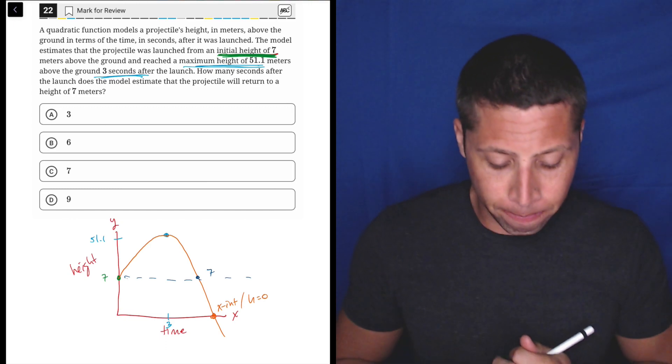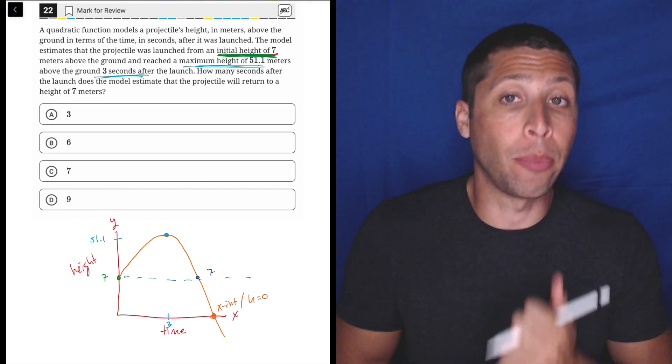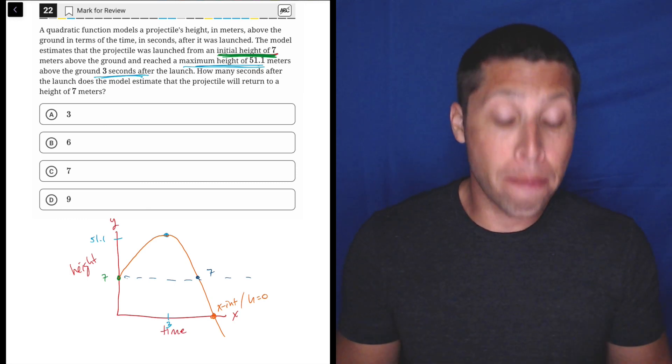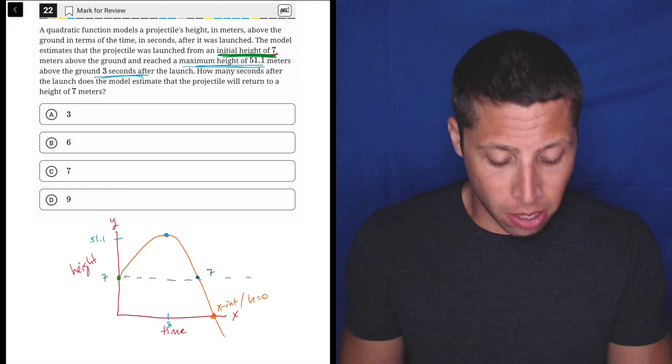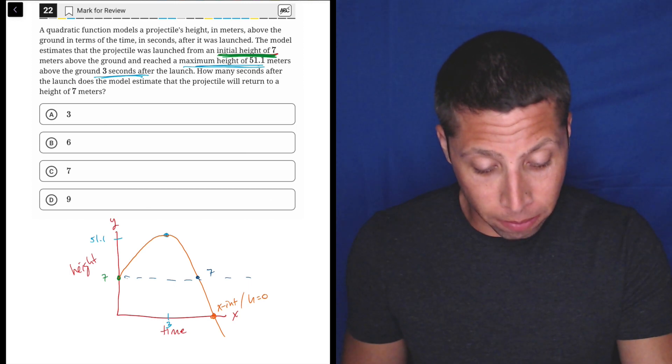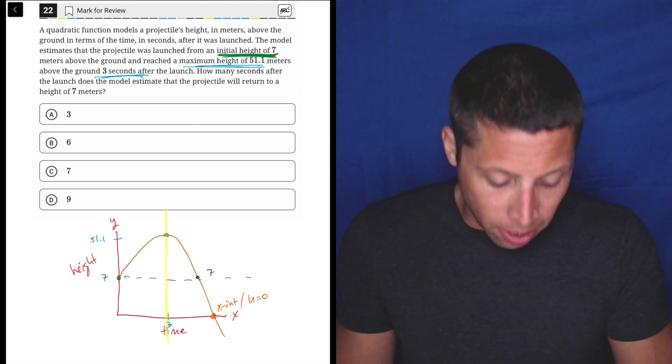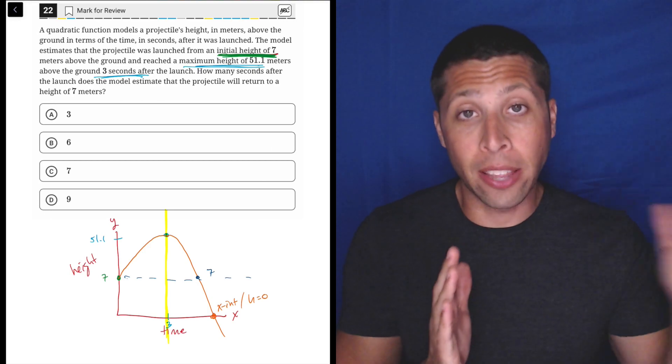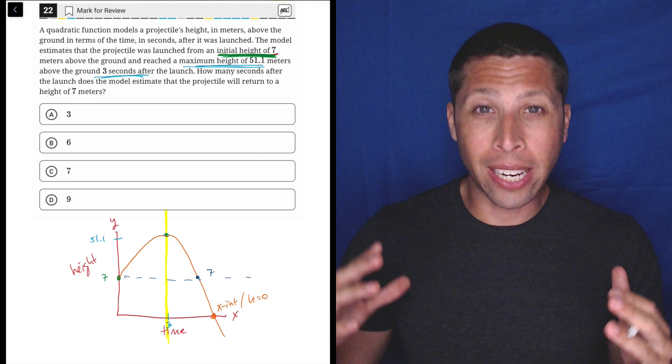Right, if we drew kind of like a horizontal line at seven meters, we would see that it's gonna hit it again, it's gonna pass that point again. The reason you might get stuck is there's one more fact that we need to know, and it's that parabolas are symmetrical about their maximums and minimums. So basically, if I drew another kind of line here, we'll use the highlighter, the left side of this parabola, the left side of this highlighted line, and the right side are mirror images of each other.